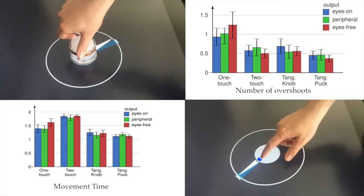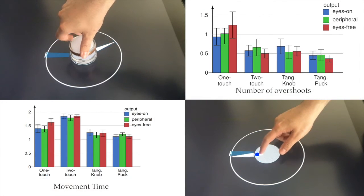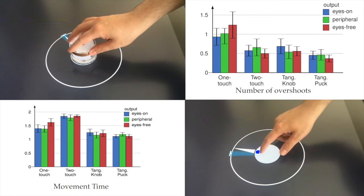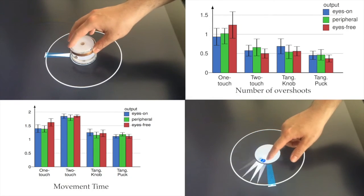We measured the task completion time and the number of overshoots. Our results show that in general, tangible knobs were faster and more accurate than both touch input methods.